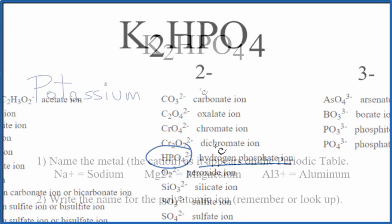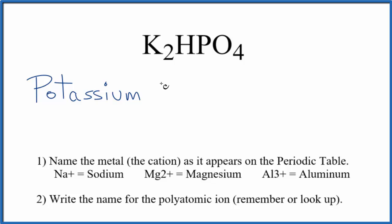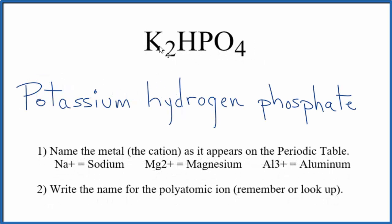Let's go back to our name and write hydrogen phosphate. The name for K2HPO4 is potassium hydrogen phosphate.